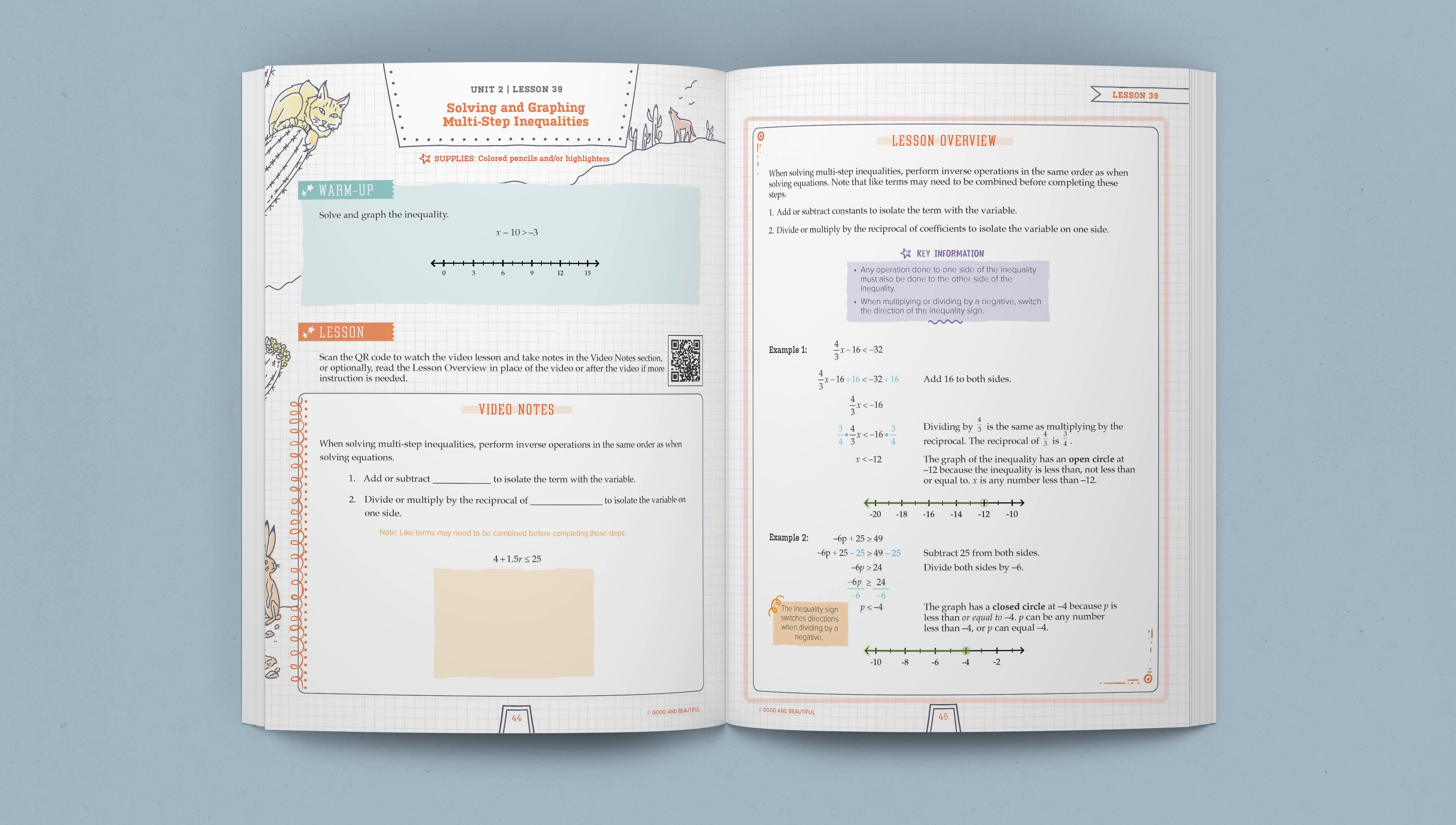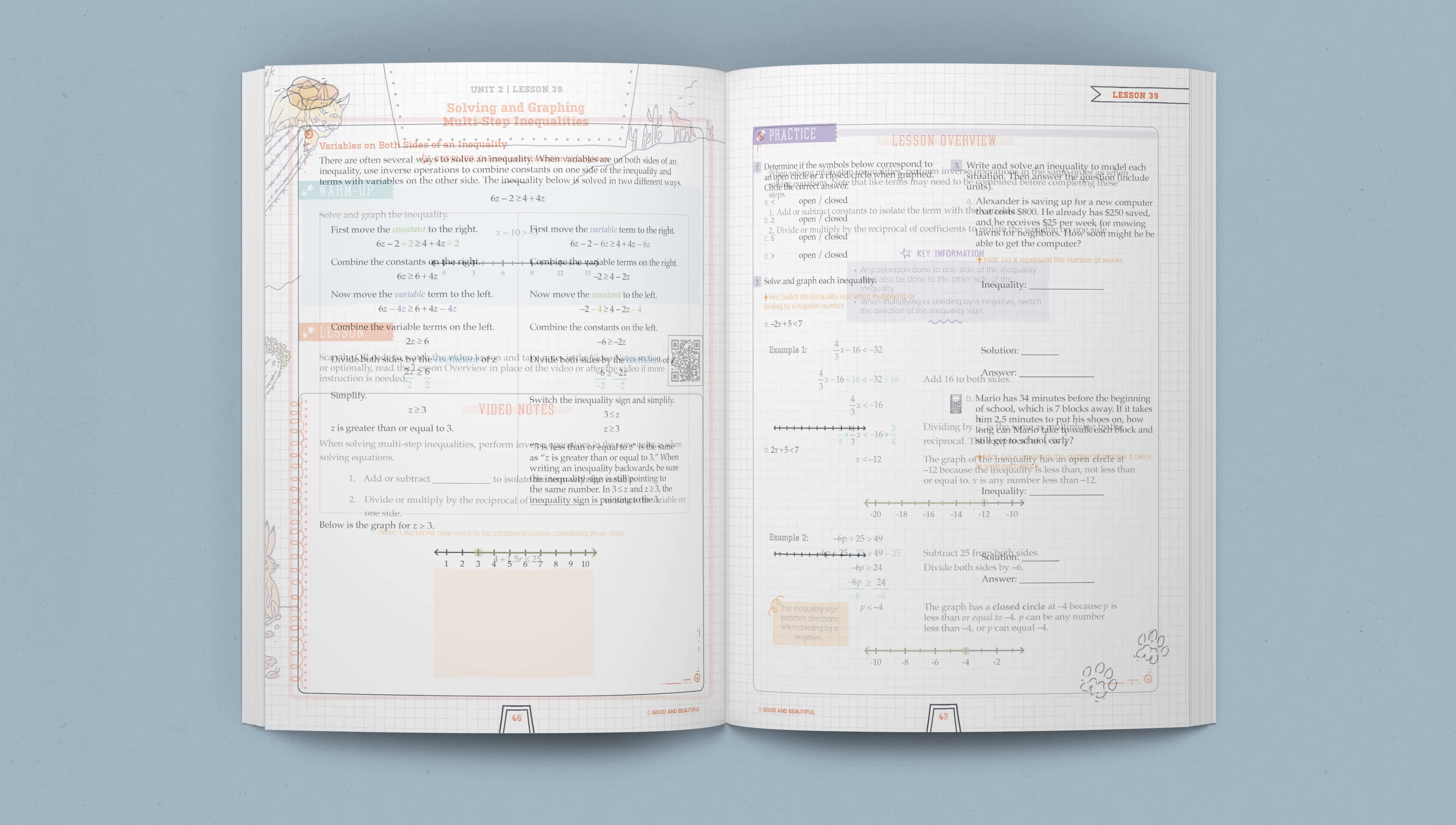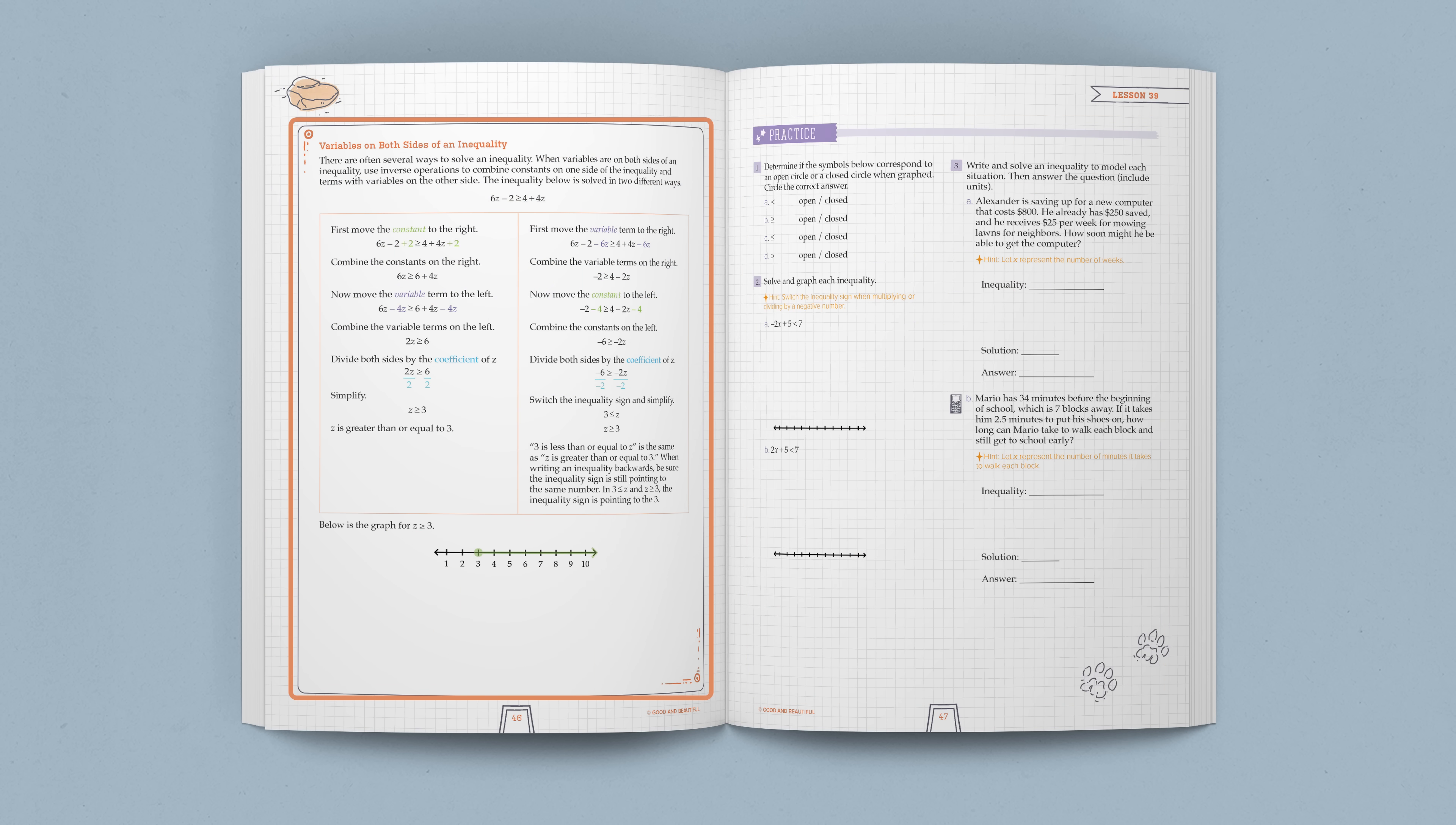Next, students can read the Lesson Overview if desired. In Math 7, the Lesson Overview replaces the mini-lesson found in lower-level courses and is a more complete lesson rather than a concise summary. The Lesson Overview solidifies concepts learned in the video and provides helpful hints and reminders.